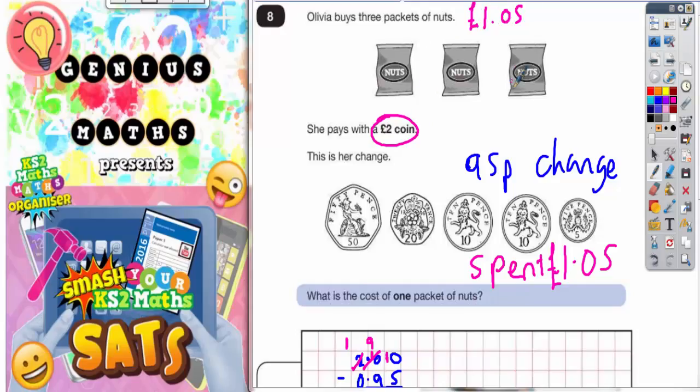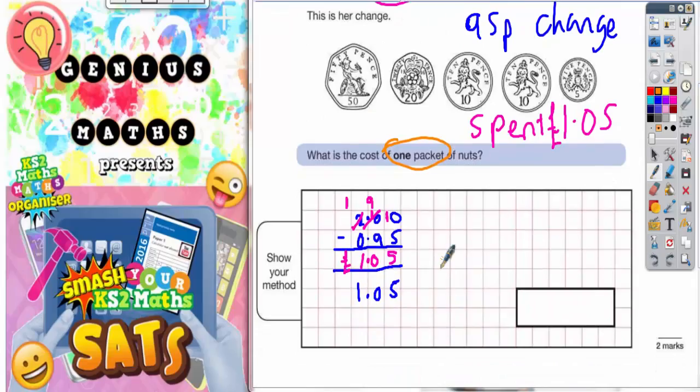Well, this is three packets of nuts, so we need to share one pound five by three because the question is actually asking us for one packet of nuts. So if we share one pound five by three, here we go. You can do a bus shelter for this, short division.